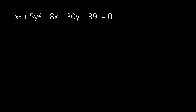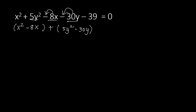Now the second example: x squared plus 5y squared minus 8x minus 30y minus 39 equal to 0. First, we group those with the same variables. We have x squared minus 8x in one group, and then 5y squared minus 30y in another group. We move the constant to the other side — since it is minus 39, it becomes positive 39 on the right side.